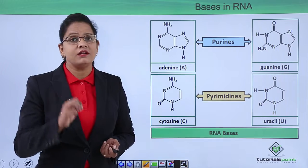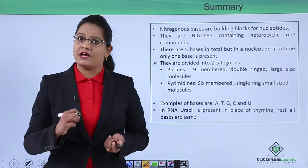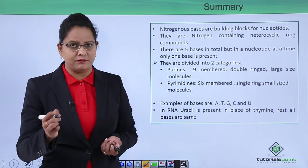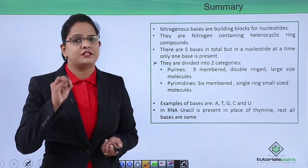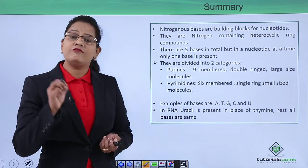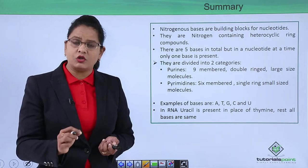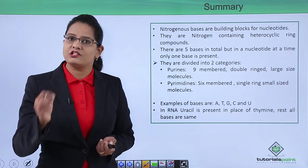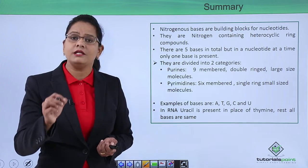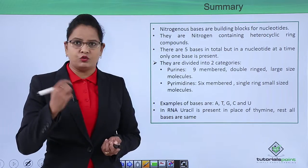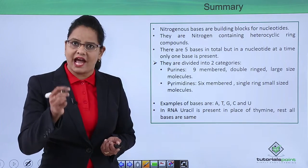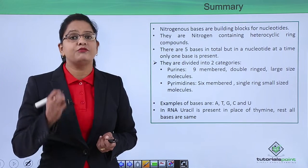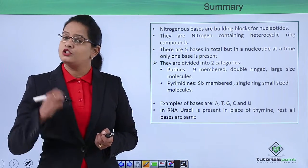To summarize: nitrogenous bases are the building blocks for nucleotides. These bases are nitrogen-containing heterocyclic basic ring compounds and are of two types — purines and pyrimidines. Five bases exist in total, but each nucleotide carries only one base. DNA has four bases: A, T, G, C; RNA has four bases: A, U, G, C — with uracil replacing thymine. Purines are nine-membered, large, and are of two types (adenine and guanine); pyrimidines are six-membered, smaller, and are of three types (cytosine, thymine, and uracil).